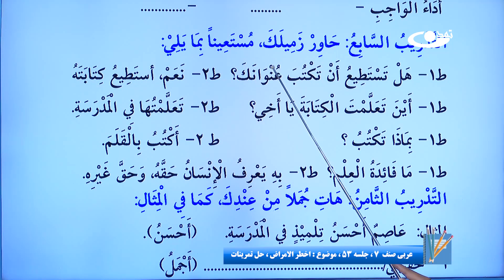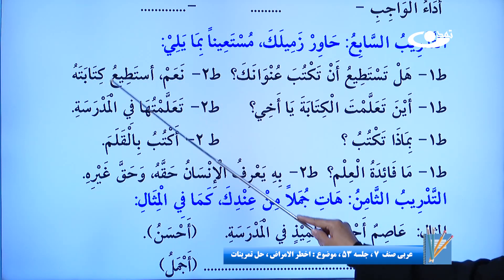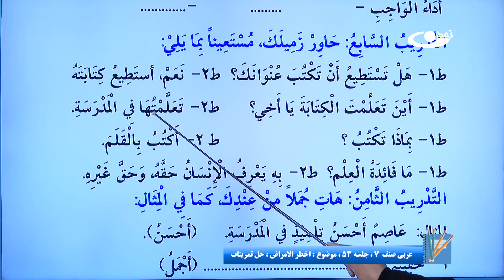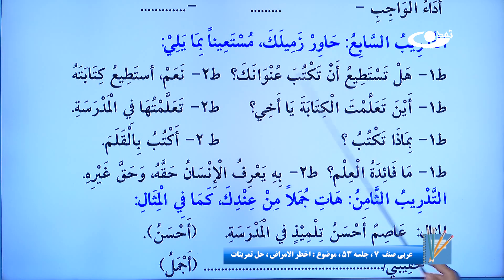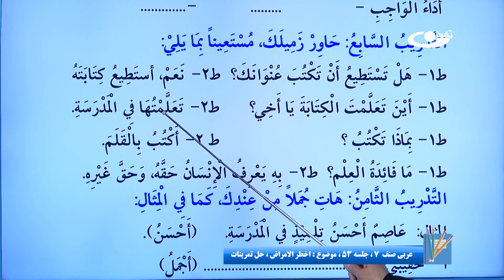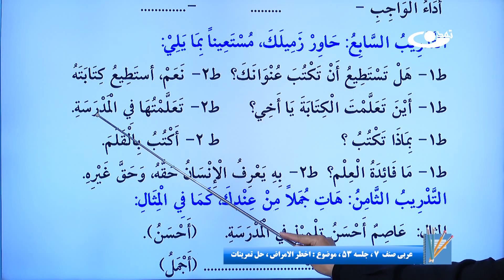جواب را با صیغه متکلم می‌دیم: «نعم، أستطیع کتابته» - بله، می‌توانم نوشتن عنوانم را. «أین تعلمت الکتابة یا أخی؟» کجا یاد گرفتی نوشتن را، ای برادرم؟ دقت کنیم که «تعلمت» فعل ماضی صیغه هفت هست، و در جواب صیغه سیزده یعنی متکلم وحده را می‌آوریم. همیشه از صیغه هفت که پرسان بشه، جواب ما با صیغه سیزده هست.